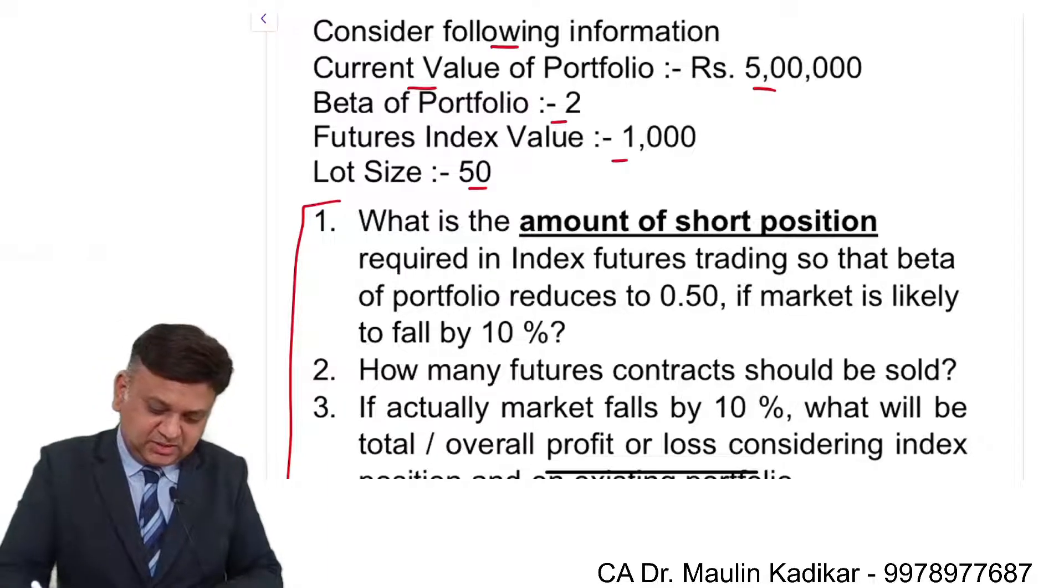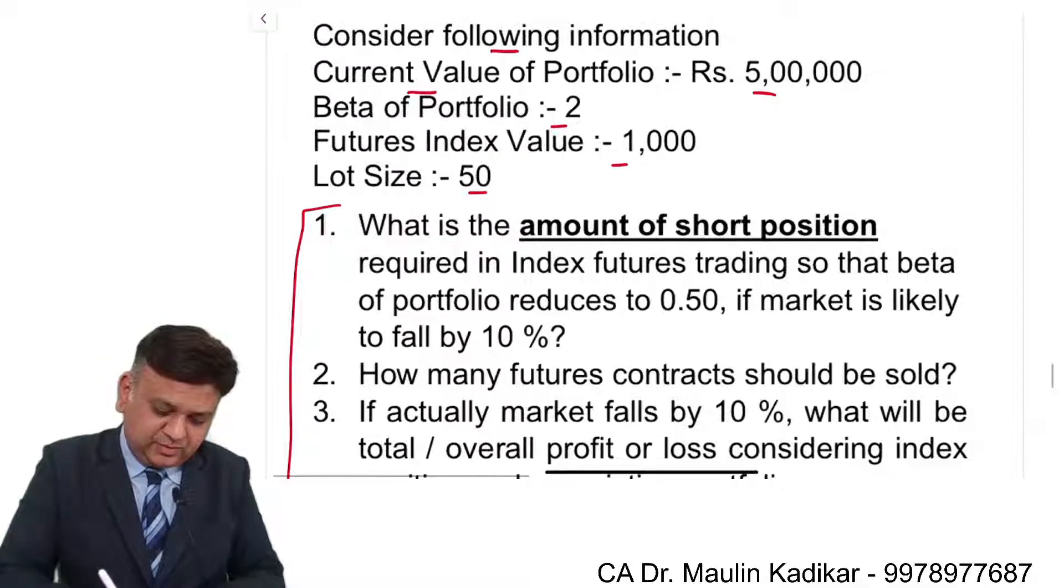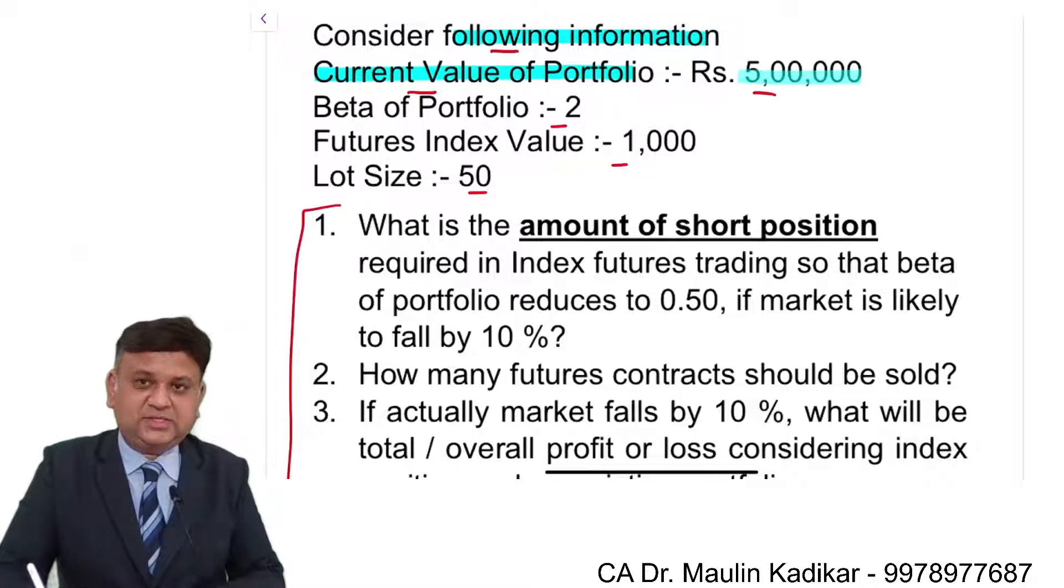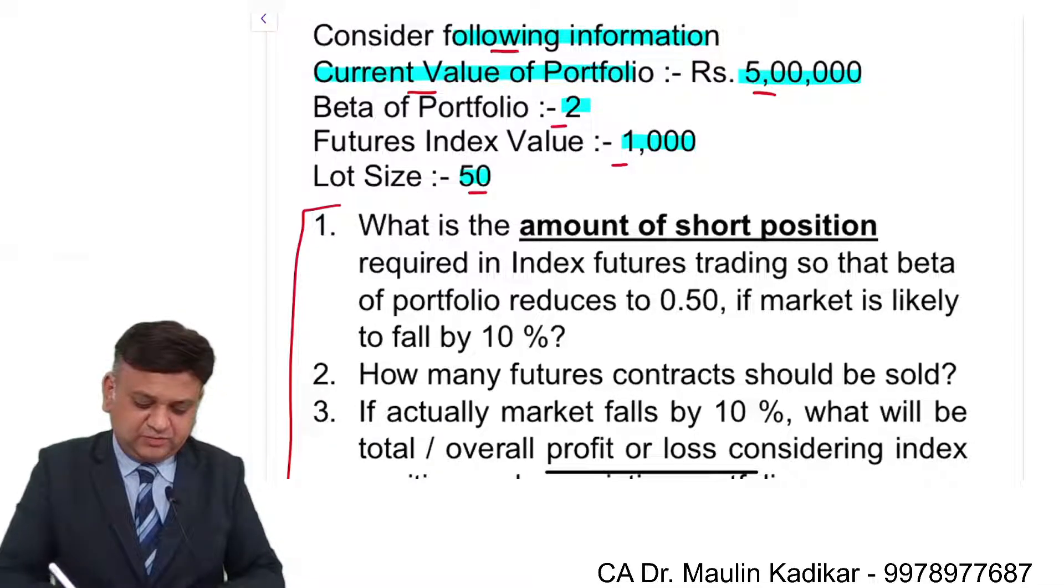So the question speaks like this: consider the following information - current value of the portfolio is 5 lakhs, beta is 2, futures index value is 1000, lot size is 50.